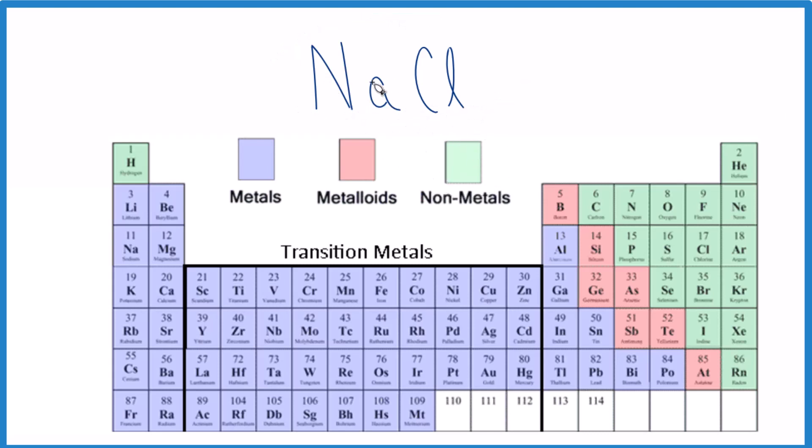So the first thing that we can do is we can find sodium on the periodic table and then chlorine. Right here is sodium, and sodium, that's a metal. Over here is chlorine. Chlorine, that's a non-metal.